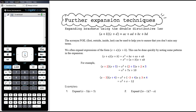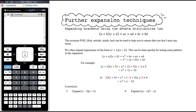The double distributive law is when we have brackets involving at least two terms, and what we need to understand is that everything in the first bracket must multiply everything in the second bracket. So a times c, plus a times d, plus b times c, plus b times d. Some people use the acronym FOIL to remember the four multiplications: First terms is a times c, Outside terms is a times d, Inside terms is b times c, and Last terms is b times d. That can help you to ensure that you've done all four multiplications.